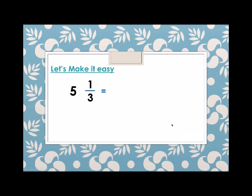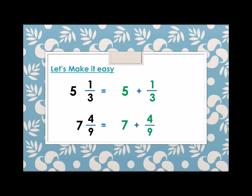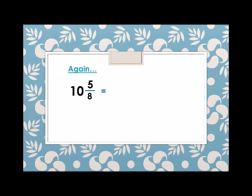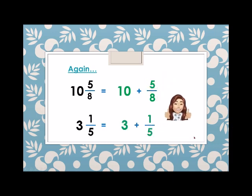Let's make it easy. Five and one third is written as five plus one third. Seven and four ninths is written as seven plus four over nine. Ten and five eighths equals ten plus five eighths. And three and one fifth is also equals three plus one fifth.